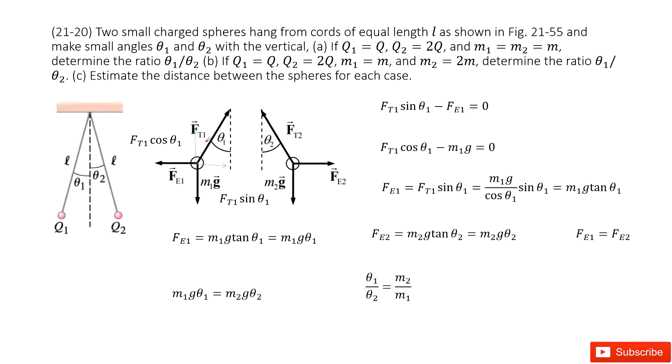Now we can project the tension FT1 in the x component, which becomes FT1 sin θ1. In the y component, it becomes FT1 cos θ1. Particle 1 is balanced.